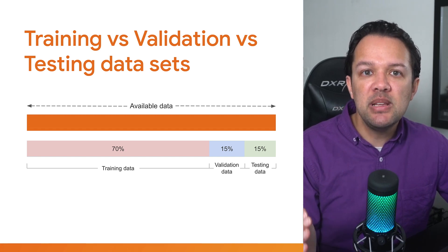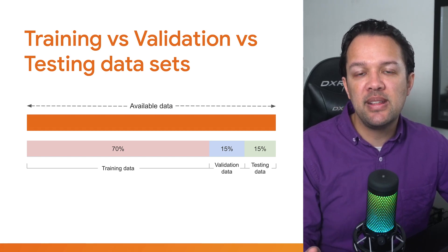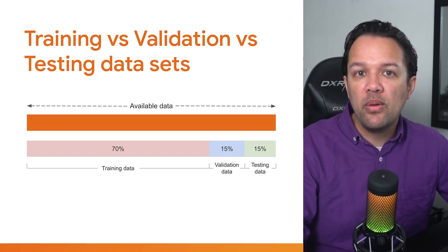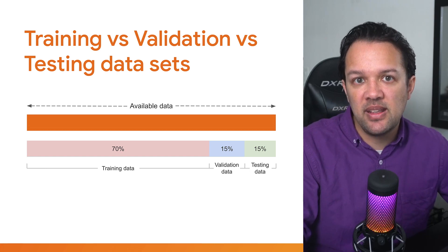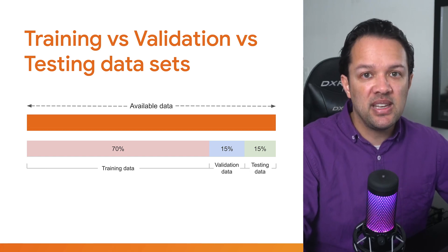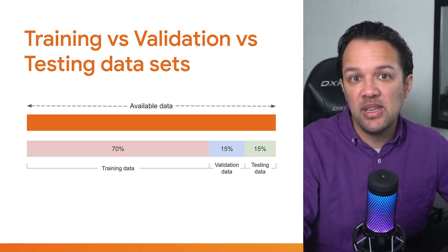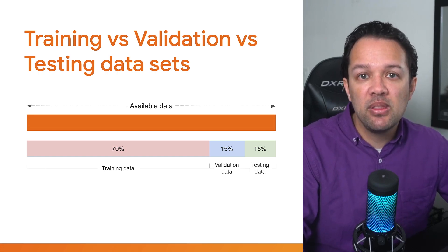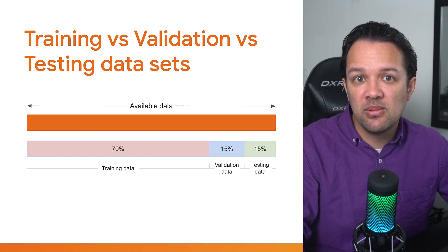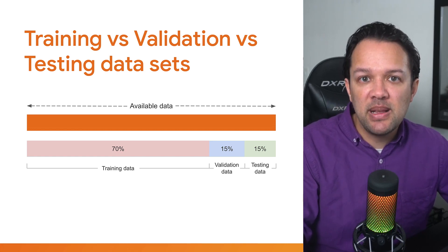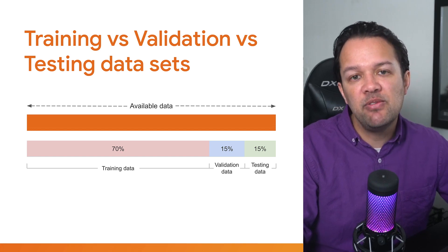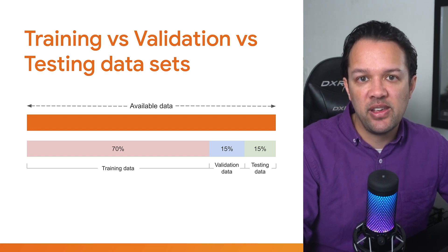You can randomly split your available data into three sets: one for training, maybe 70% of the data; one for testing, say 15% of the data; and the final one for validation, the final 15% of the data. Exact splits will depend on how much data you have available, so you may see variations of this.